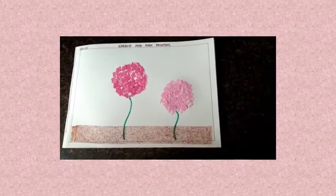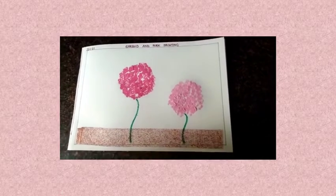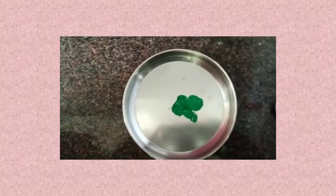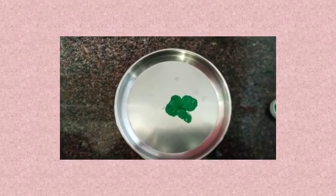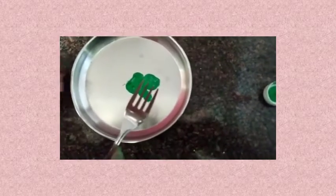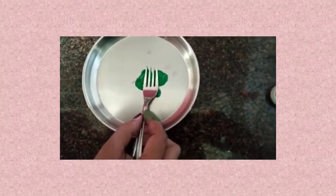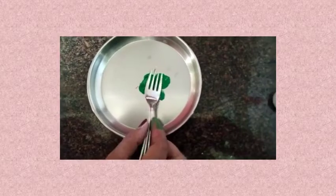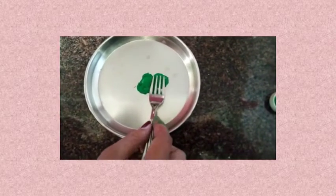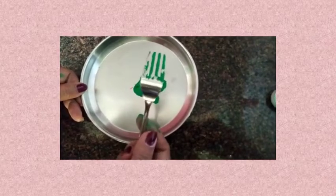Now, time to make some grass using your dark green color. Teacher has taken some dark green color and put it in a plate. You will next take a fork and just dip it like this in the paint. Can you see? It should get dipped in the paint like this.